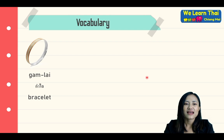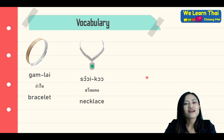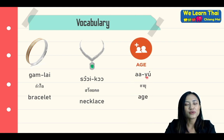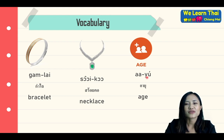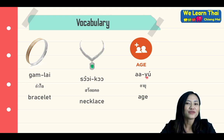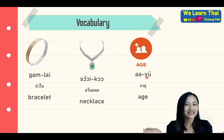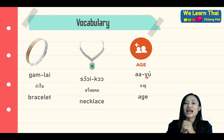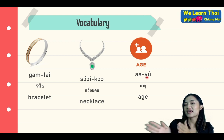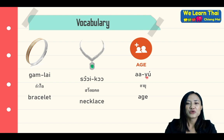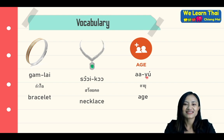Next vocabulary: gam lay means 'bracelet'; soai kho means 'necklace'; and ayu means 'age.' So if you want to ask 'How old are you?' you will say: Khun ayu tao rai? — tao rai means 'how much' or 'how many,' so literally 'How many years of age are you?' meaning 'How old are you?'